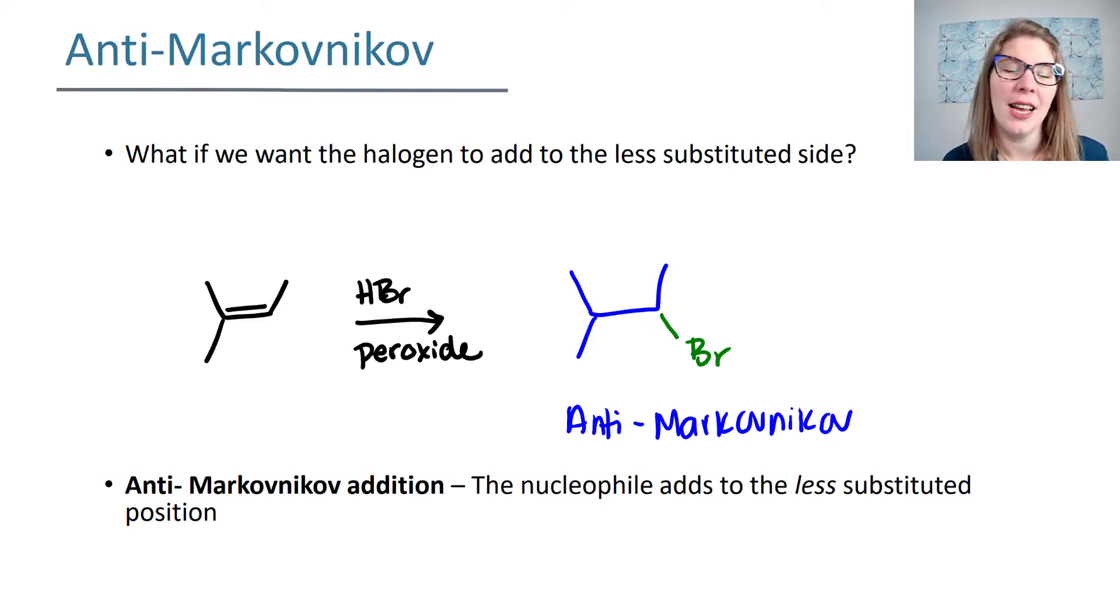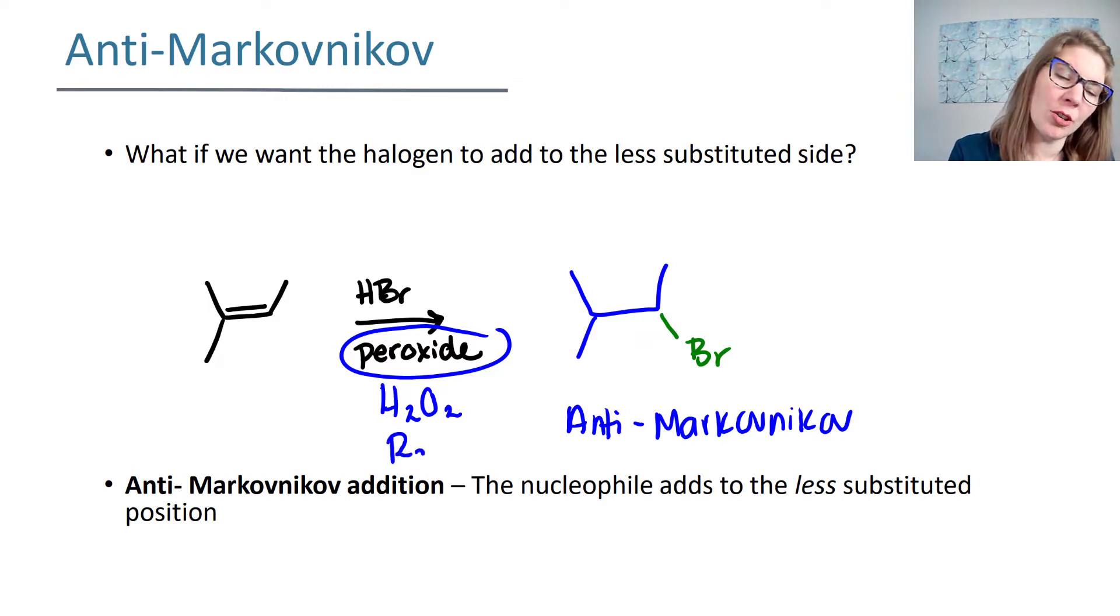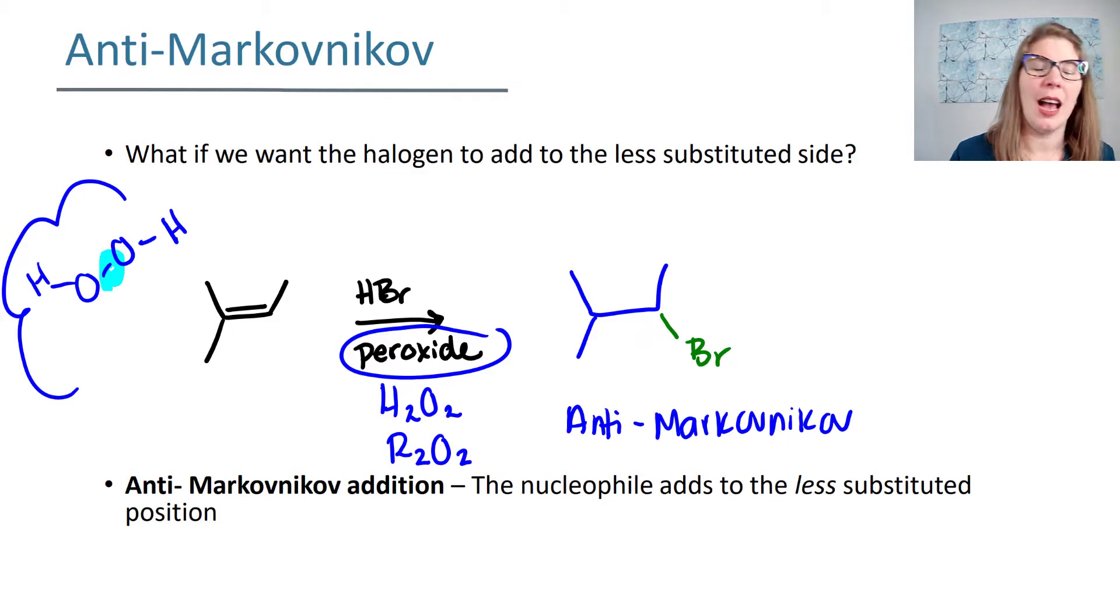There's a couple of ways to write peroxide. Some people will write the word peroxide. Other people will use our favorite and most commonly known peroxide, which is hydrogen peroxide. And some people will write R2O2, because it really doesn't matter if the peroxide has hydrogens on either side or if it has some kind of alkyl group. The key is when you're looking at peroxides, they need to have that oxygen-oxygen bond.